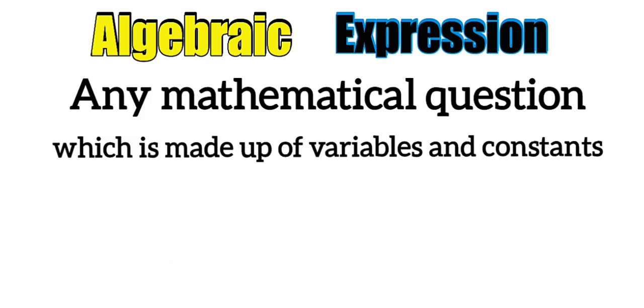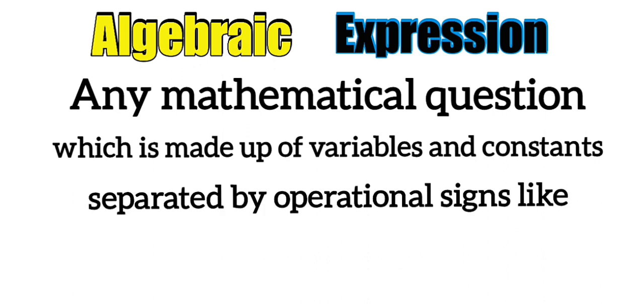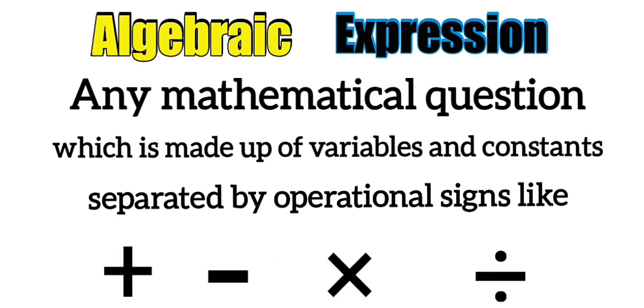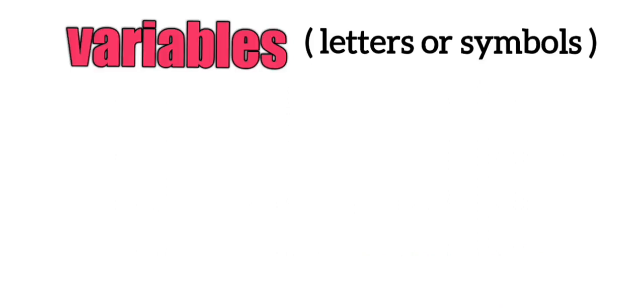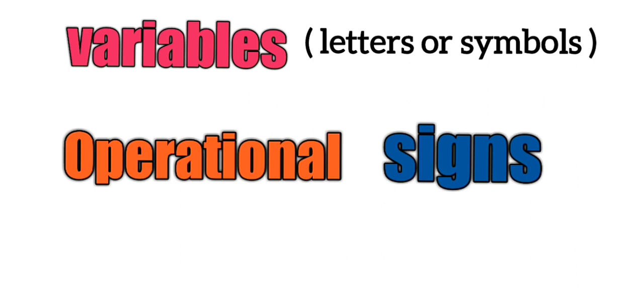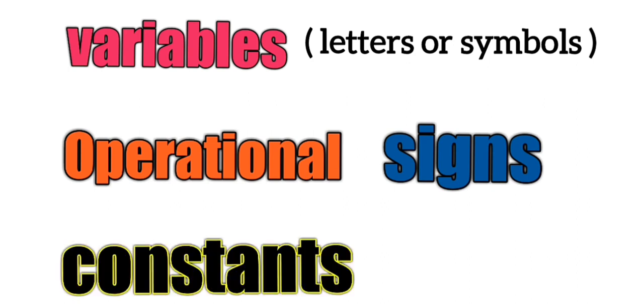Now that you understand what an algebraic expression is, let's look at some examples. An algebraic expression is any mathematical expression made up of variables and constants separated by operational signs like addition, subtraction, multiplication, and division. For each example, I will identify the variables, the operational signs, and the constant numbers.